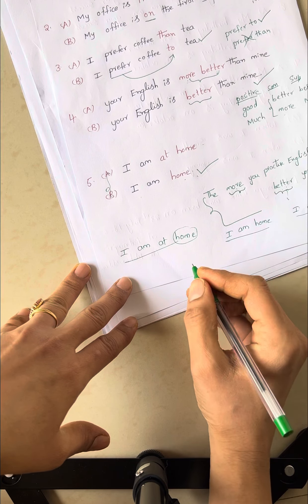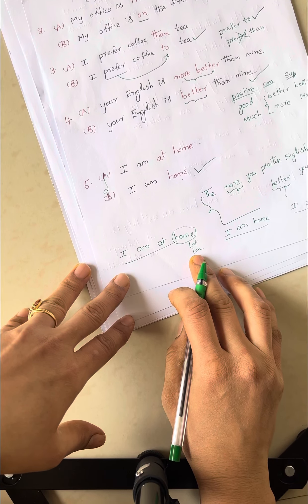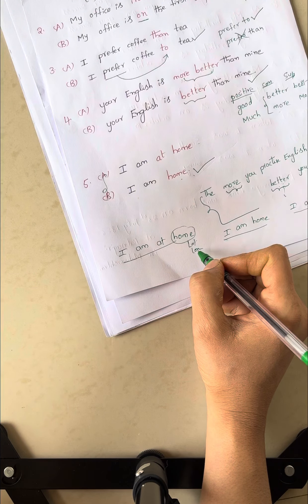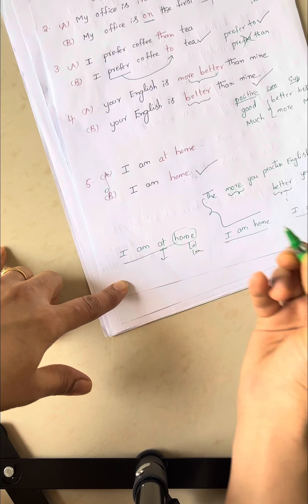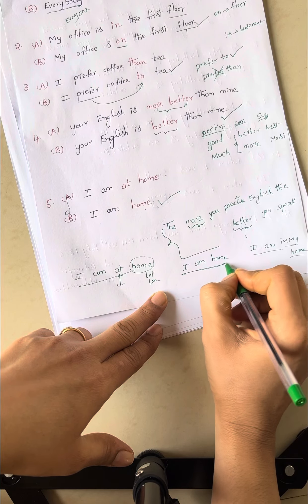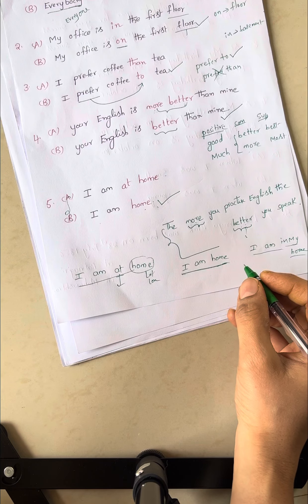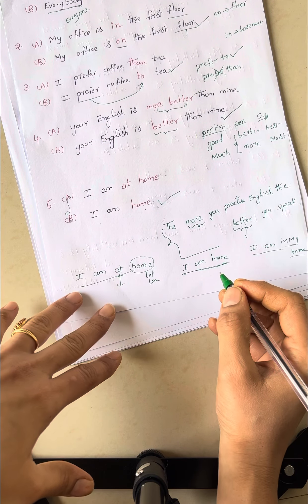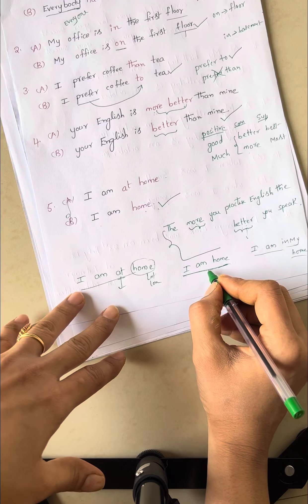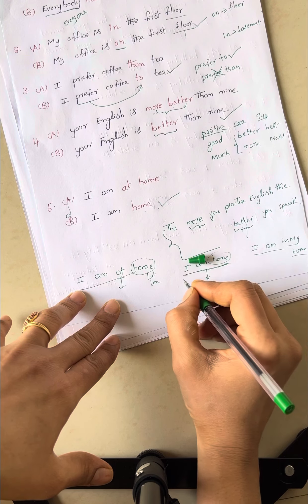When you consider home as a spatial location, at that time you can use the preposition at. I am home means: suppose you go outside with your friend and you reach your home safely. At that time you text your friend that you safely reached home. At that point of view, you can use I am home.